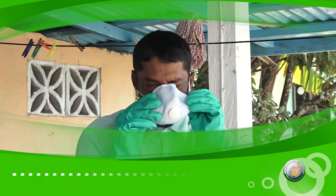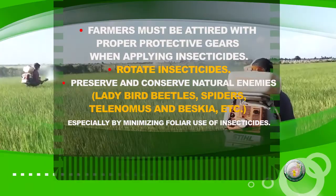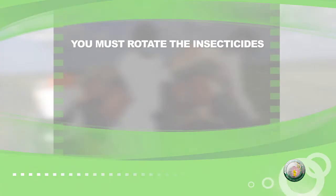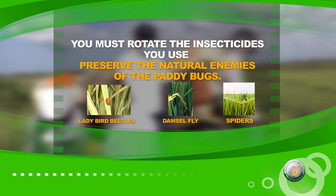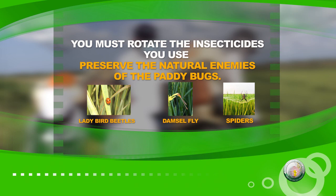A few important tips to note: farmers must be attired with proper protective gear when applying insecticides. You must rotate the insecticides you use. Preserve and conserve natural enemies — that is, ladybird beetles, spiders, etc. — especially by minimizing the use of insecticides.